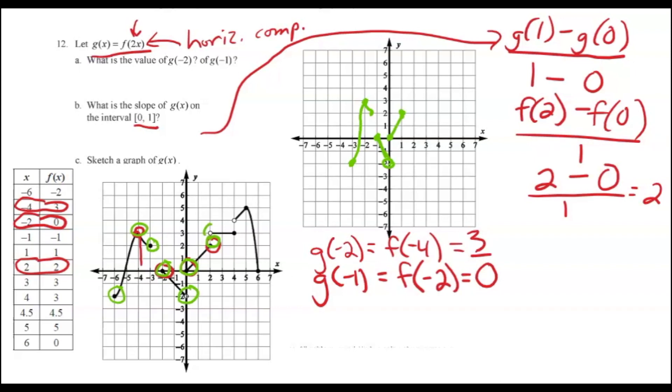Then we have 2, 3 as a hole. That'll be 1, 3, again, because we're halving the X coordinates. Then we have 4, 3, which will become 2, 3. So here's that piece.